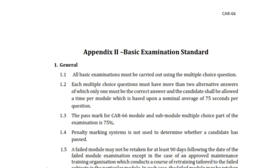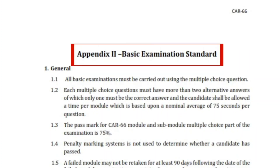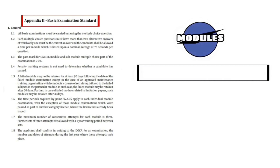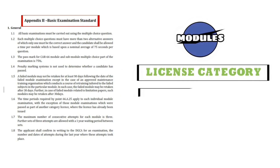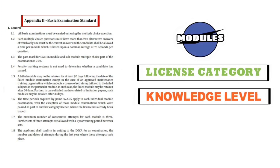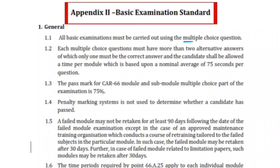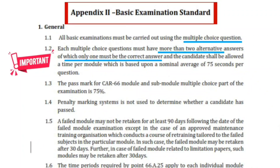Appendix 2: Basic Examination Standard. We now know the modules and applicable categories, as well as the knowledge level required for different categories. Let us see the examination standard set by DGCA for the basic examination. The examination will be MCQ — multiple choice questions — with more than 2 options, of which only 1 correct option. The average time per question is 75 seconds.